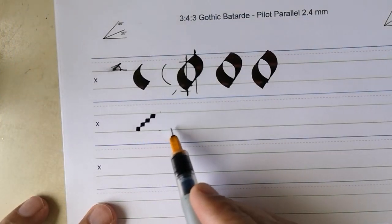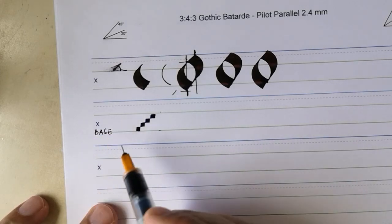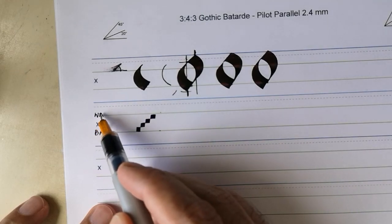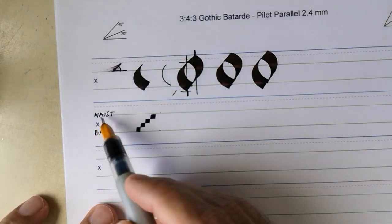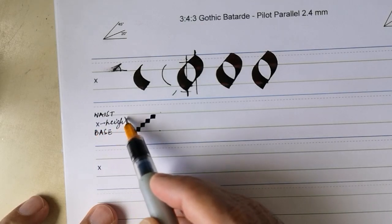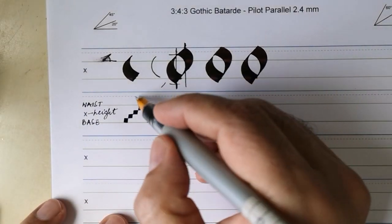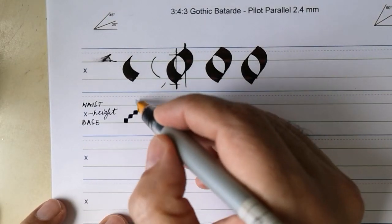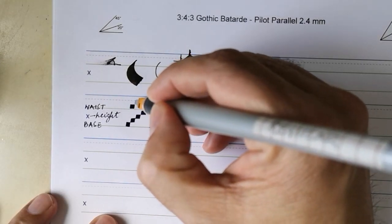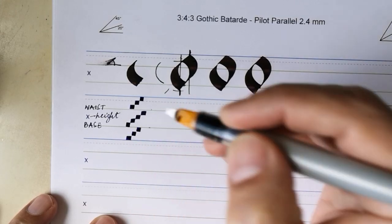This is the space where we will be writing the body of the letter. So the line that we write on is called a baseline. The line at the top of the body of the letter is called a waistline and the distance between the two is called x height literally the height of the letter x. Now we have some letters that have ascenders and descenders. So the ascender space is three nib widths tall as is the descender space.